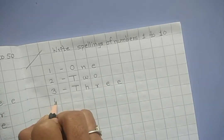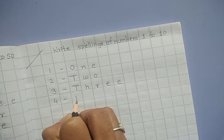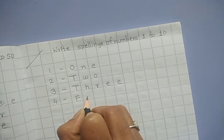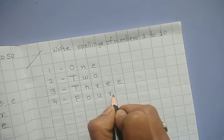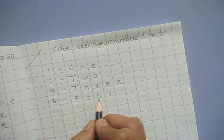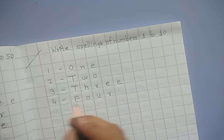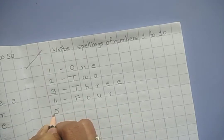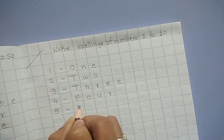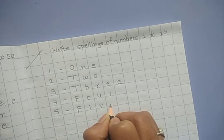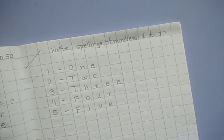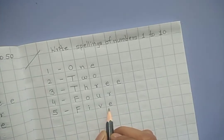Number 4, capital F, small O, small U, small R, F-O-U-R, four. Number 5, capital F, small I, small V, small E, F-I-V-E, five.